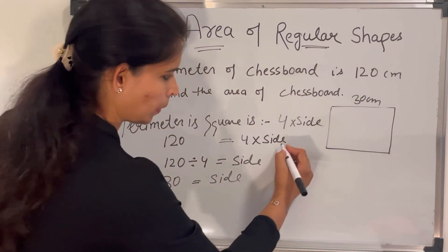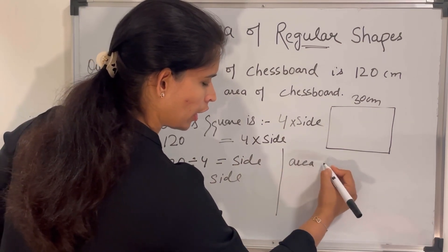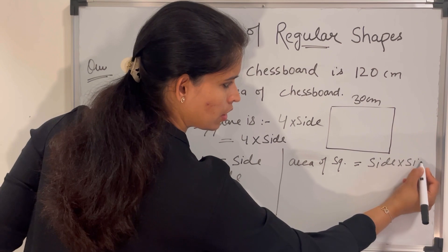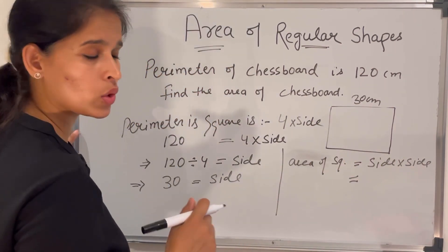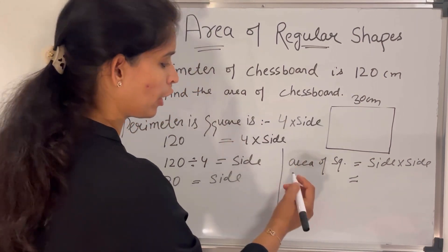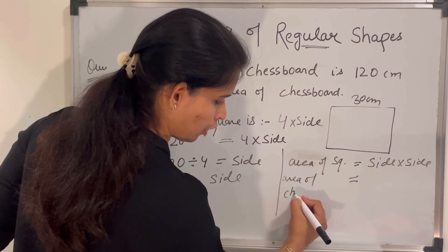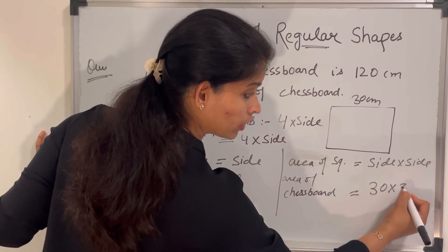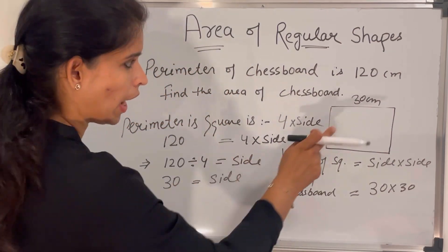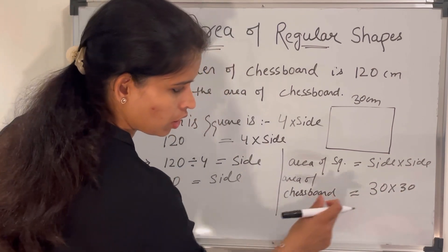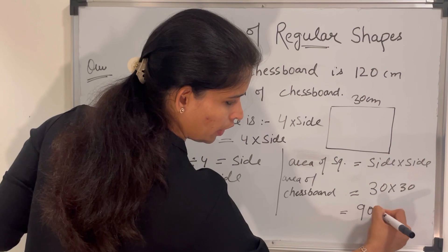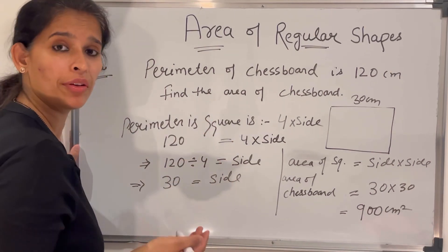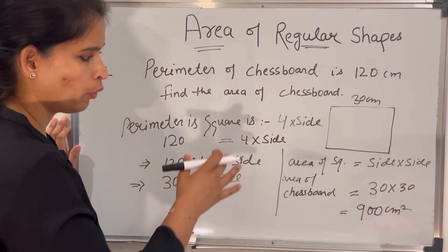Now we find the area. Area of square is side multiplied by side. Since all sides are equal and one side is 30 centimeters, the area of the chessboard is 30 × 30 = 900 centimeter square. I hope you understand how to find the area when we have the perimeter of a square or rectangle.